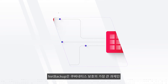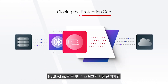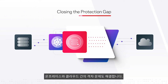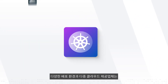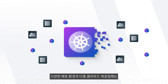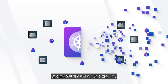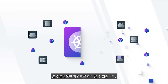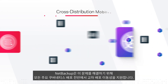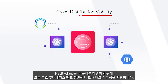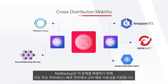NetBackup also solves what is perhaps the greatest challenge of Kubernetes protection: the gap between on-prem and in the cloud. With various distributions and multiple cloud providers, the result can be unnecessary fragmentation. To tackle this, NetBackup enables cross-distribution mobility across all major Kubernetes distributions, wherever they live.